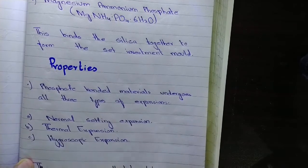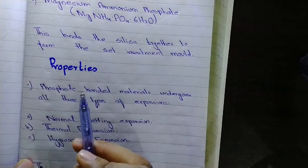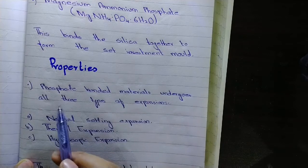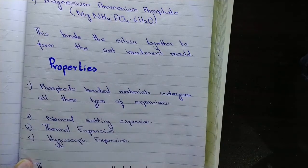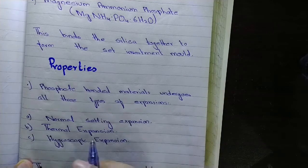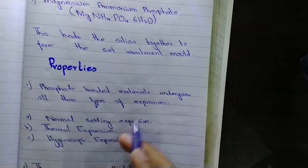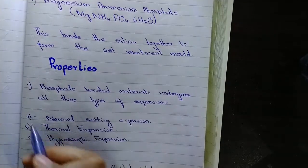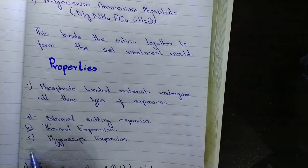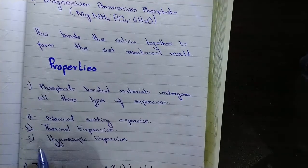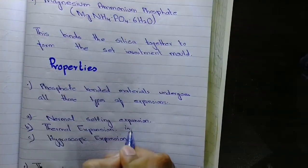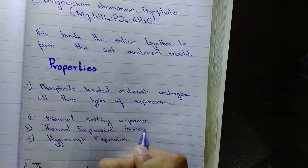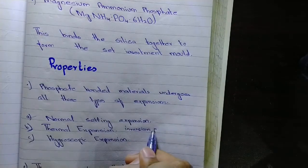Phosphate bonded materials undergo all three types of expansions: normal setting expansion, thermal expansion, and hygroscopic expansion. Thermal expansion also includes inversion expansion due to refractory materials.